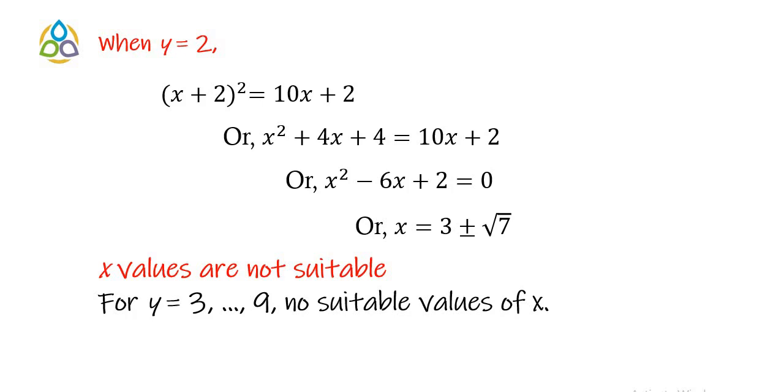So our conclusion is 81 is the only such two-digit number such that the square root is equal to the sum of the digits. So 81 is the only such two-digit number.